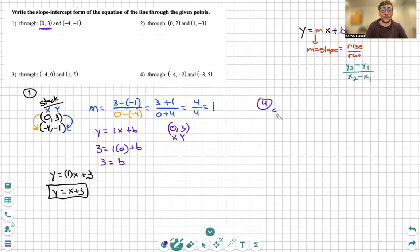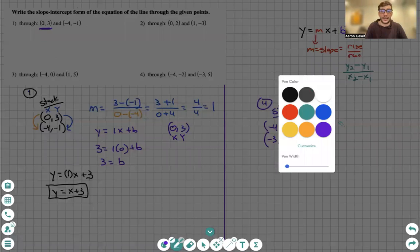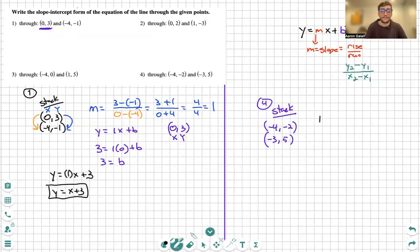We're going to start with our stack. Negative four, negative two, all over negative three, five. Let's make sure we get this line in between. All right. Now, again, we need to solve for m first, right?